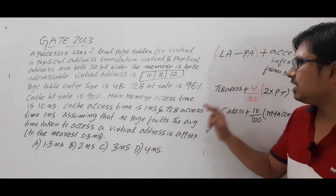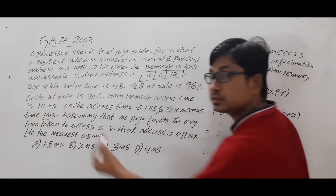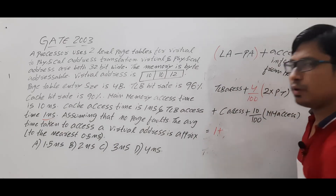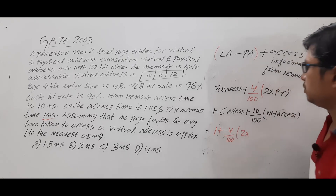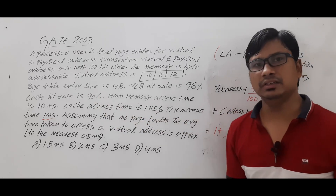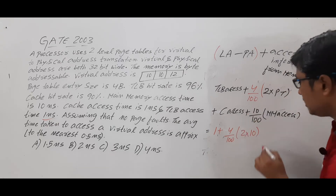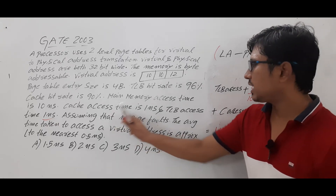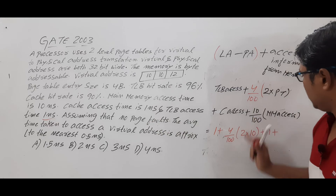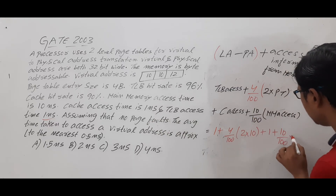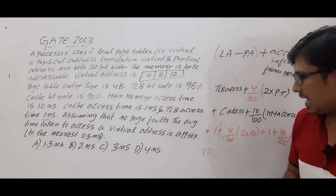Now substituting values: TLB access time = 1 ns. So we have 1 + (4/100) × 2 × 10. Page table access is main memory access = 10 ns. Cache memory access time = 1 ns. Main memory access time = 10 ns. So: 1 + (4/100) × 2 × 10 + 1 + (10/100) × 10.